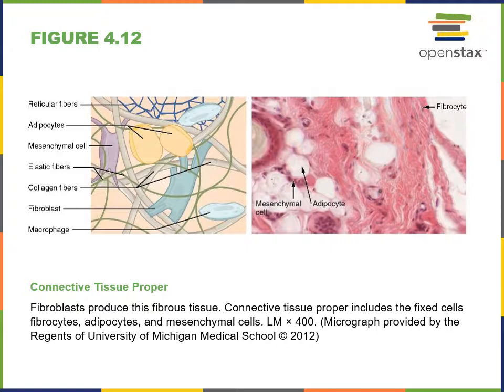The collagen fibers are large bundles of the protein collagen found in connective tissue proper. There are also smaller branching fibers called reticular fibers, which have a distinct appearance although they are also made from collagen. And there are elastic fibers that provide the ability to stretch and recoil, which are made from the protein elastin.